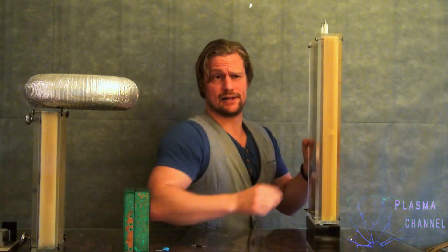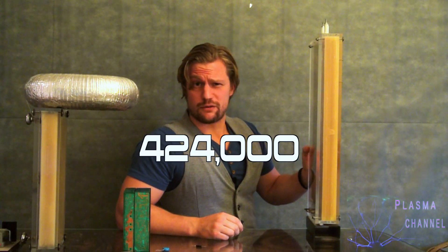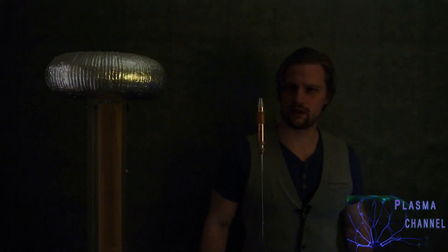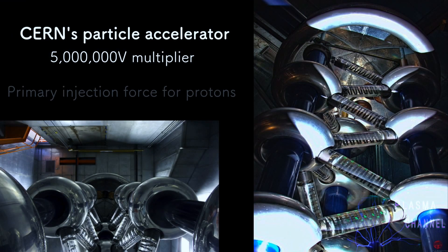And that's not nearly enough. So how about 424,000 volts? 400,000 volts — still not enough. How about 5 million? CERN uses a 5 million volt multiplier, which kind of puts mine to shame. You can basically just scale these things up and have some fun.